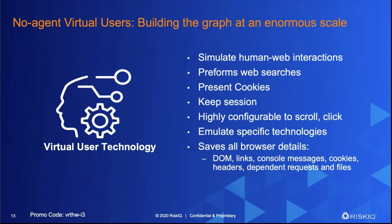We act like a real user. We might go to a search engine, create a search, have cookies, and keep session. When we go to a website, we might not pull everything from one session — we might have multiple browsers from different parts of the world going in and grabbing that data and then assembling it in the back end. With that, we bring in a lot of information like the document object model, the links, console messages, cookies, headers, dependent requests, and files. All that information is in our back end, and then we cut that off and it becomes our data sets.